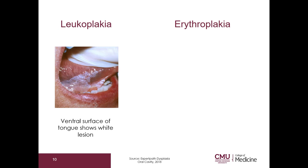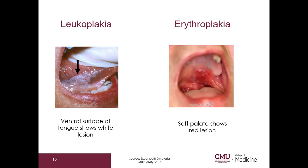Here I have a photograph of leukoplakia — you can see the white lesion on the ventral surface of the tongue. And here on the right is erythroplakia — you can see the red lesion on the soft palate.